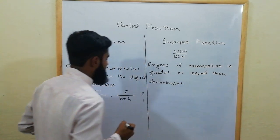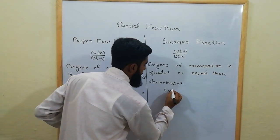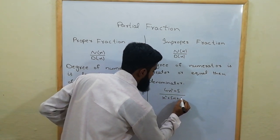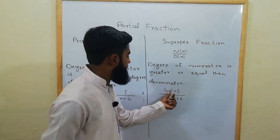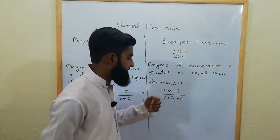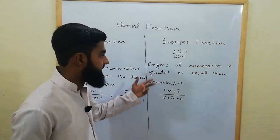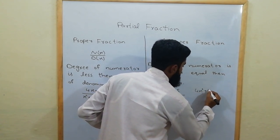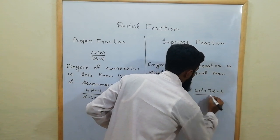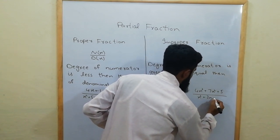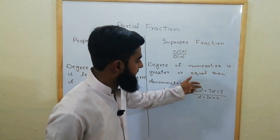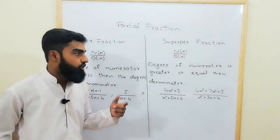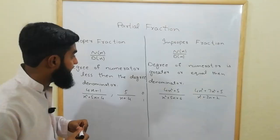For example, (4x² + 5) over (x² + 5x + 6): the degree of the numerator is 2 and the degree of the denominator is also 2, so 2 equals 2 — this is an improper fraction. Another example is (4x³ + 7x² + 5) over (x² + 3x + 2): the degree of the numerator is 3 and the degree of the denominator is 2, so 3 is greater than 2 — this is also called an improper fraction.